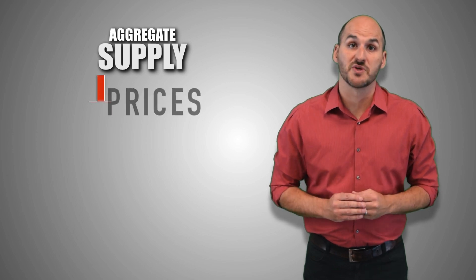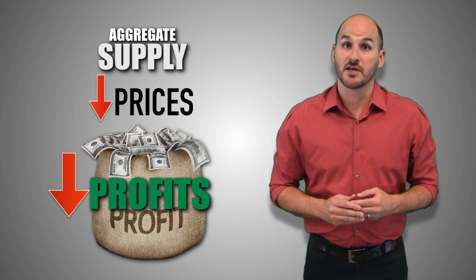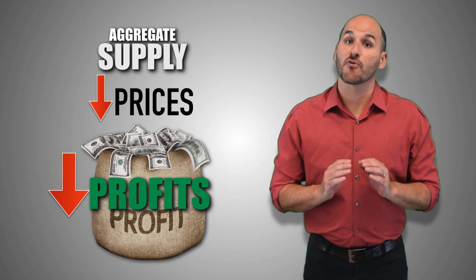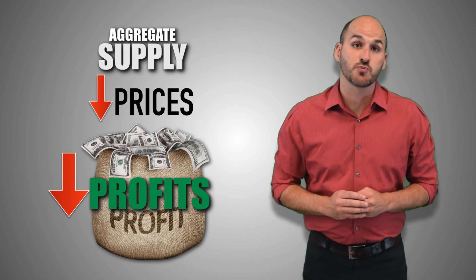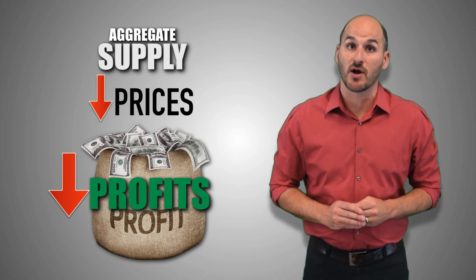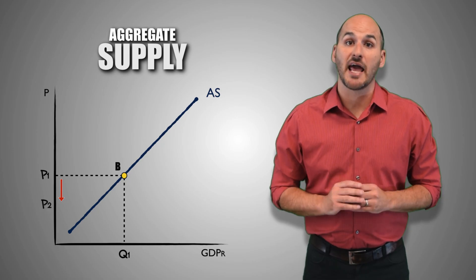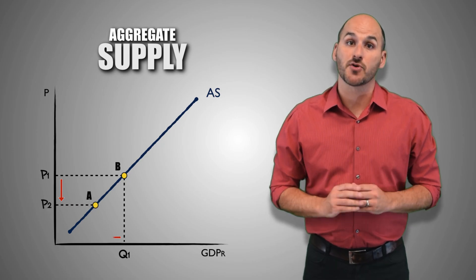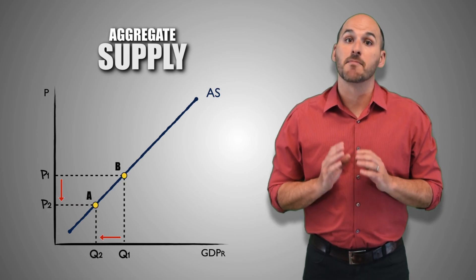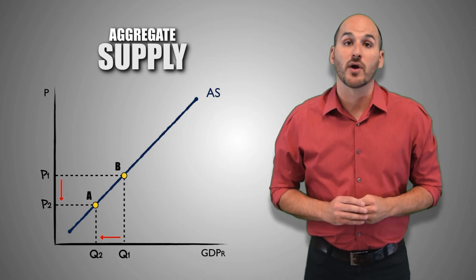When prices fall due to deflation, firms see a smaller likelihood to earn large profits, because in the short-run wages are fixed and revenues are falling, and so firms are less willing and able to supply the same quantity of aggregate real GDP output at lower prices. As a result, a decrease in price level across the aggregate economy causes a decrease in aggregate real GDP output supplied, and a movement along the short-run aggregate supply curve from point B to point A.